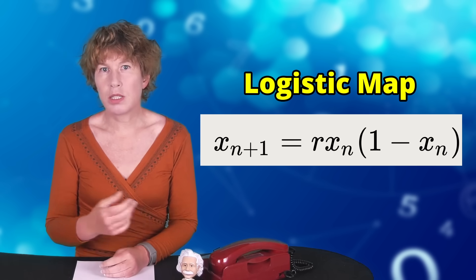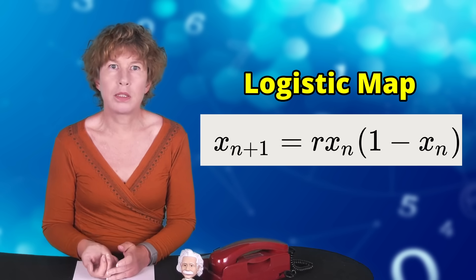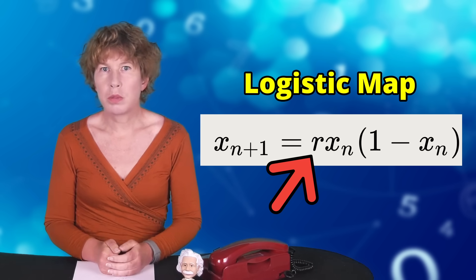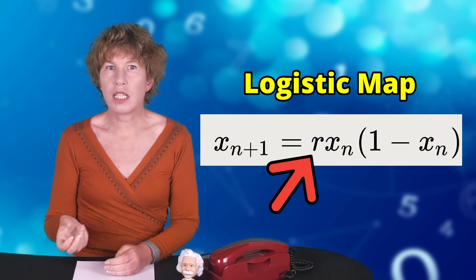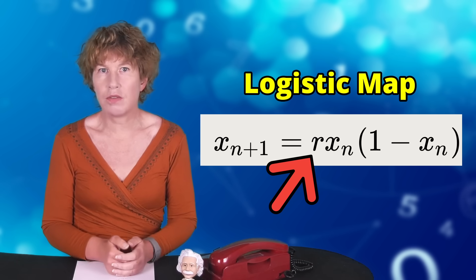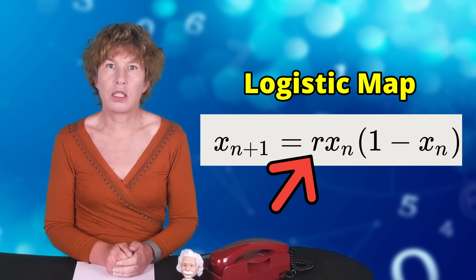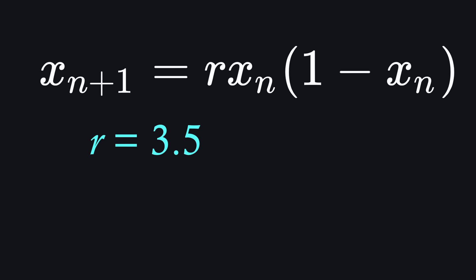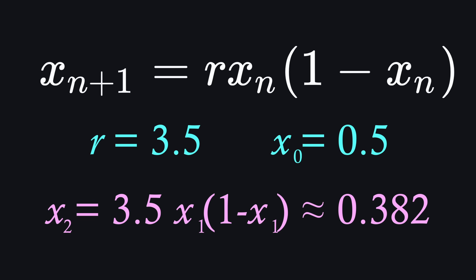5. The logistic map. The logistic map is defined as a sequence of numbers and looks entirely unremarkable. It has only one parameter that I'll write as R. You start with some number between 0 and 1 and then you calculate the next number as R times your starting value, times 1 minus the starting value. That gives you a new number and then you do it again. For example, if you take R equals 3.5 and start with the initial value 0.5, then you get 0.875. Then you do it again and get 0.382, and you do it again and get 0.827 and so on. Looks simple enough.